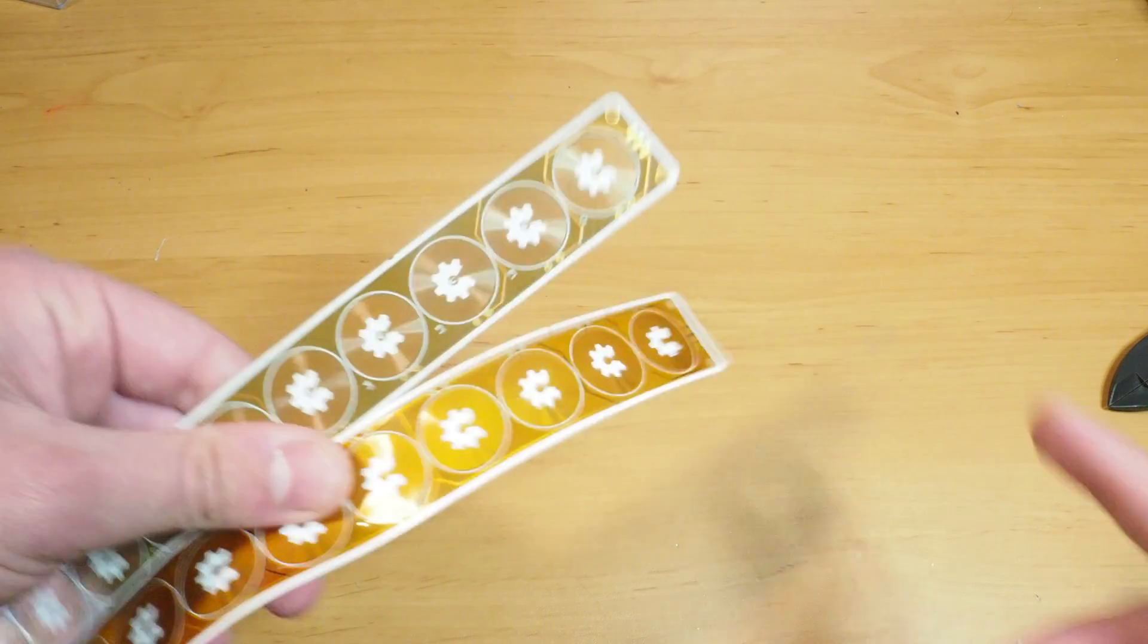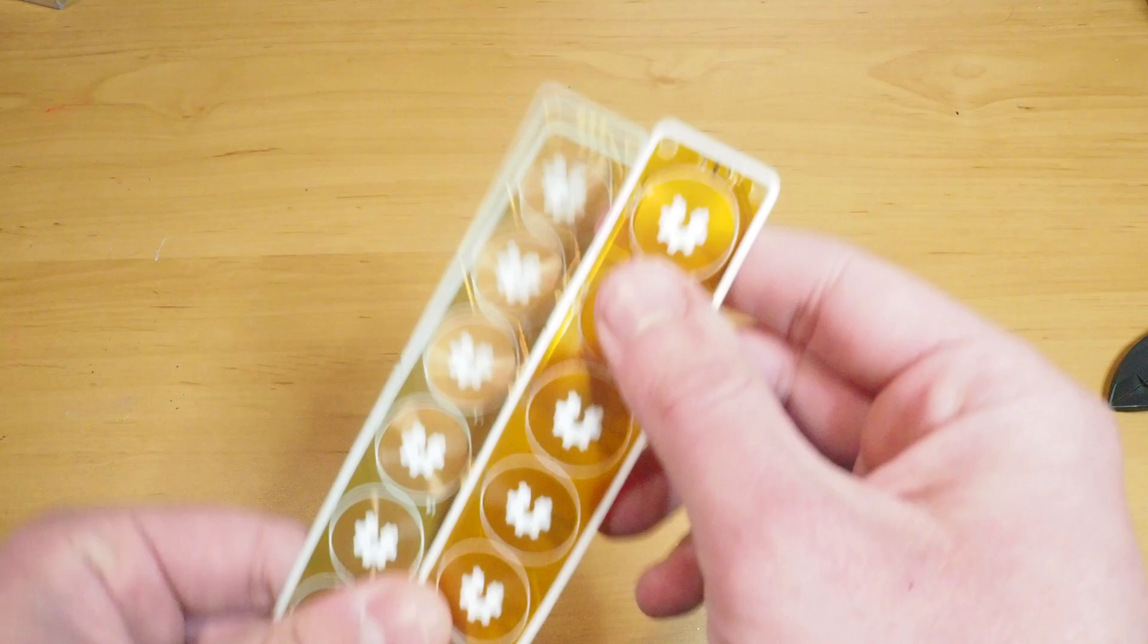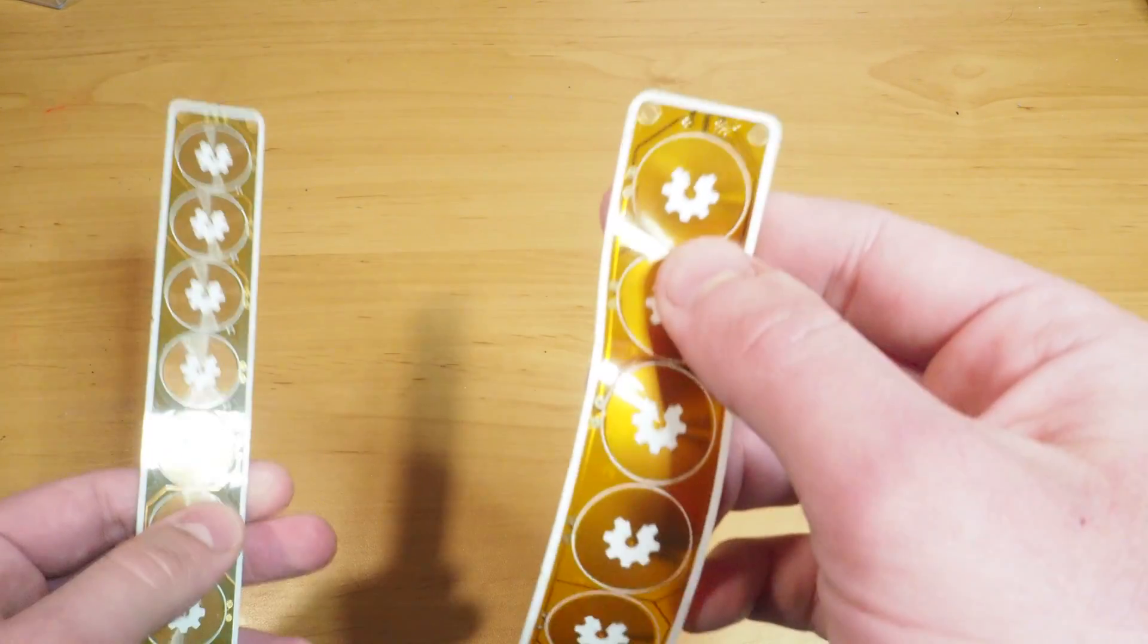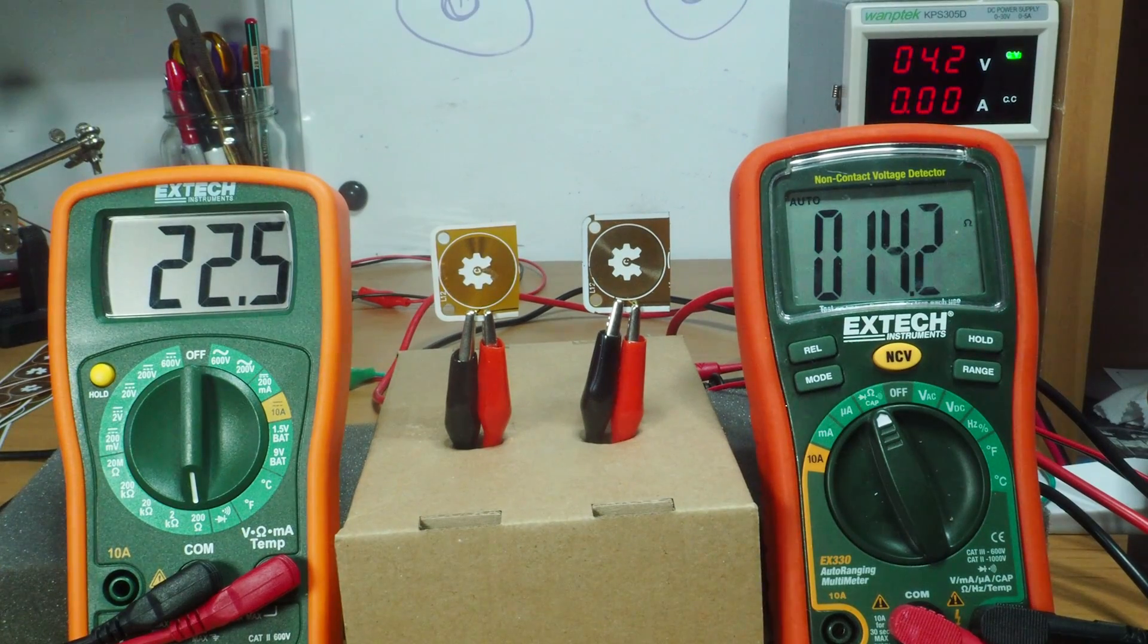This extra thickness should obviously affect how bended the PCB is but it also should affect the parameters of the coil. So let's start off by measuring the resistance of one of these coils.